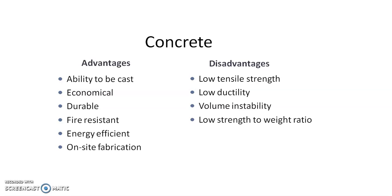What are the advantages and disadvantages of concrete? The major advantages are we will be able to cast it so that we can get it in different shapes. It is economical, it is durable — durable means the life of the structure is more. It is fire resistant, energy efficient and we can fabricate it on site also. The major disadvantage is it has low tensile strength, low ductility, volume instability and low strength to weight ratio. As the dead load is more, compared to the dead load the strength is lesser. In order to counteract the lower tensile strength of the concrete, we incorporate steel into the concrete making it a reinforced one.